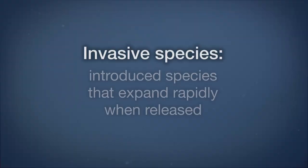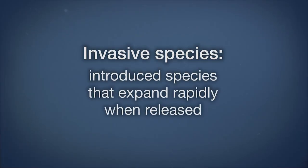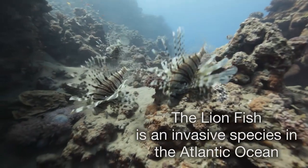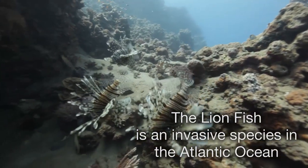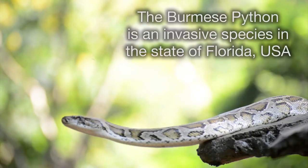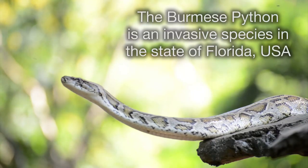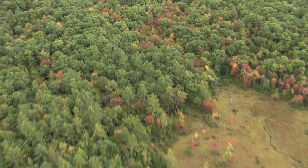One type of introduced species that causes a tremendous amount of environmental degradation is the invasive species. Invasive species are introduced species that expand rapidly when released. This happens for a number of reasons, including their ability to out-compete a native species, or the absence of predators. It also can occur because there was an unfilled space in that ecosystem.